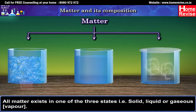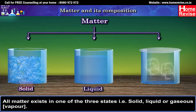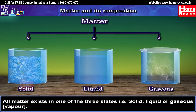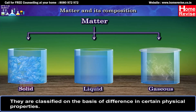Matter exists in one of three states: solid, liquid, or gaseous, i.e. vapour. They are classified on the basis of difference in certain physical properties.